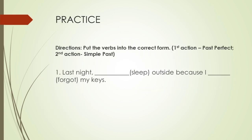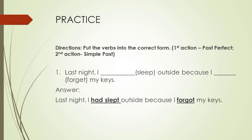Let's practice what you already know by doing this activity. The directions: put the verbs into the correct form — transform the first verb into past perfect and the second verb into simple past. For the first sentence, the answer is: 'Last night I had slept outside because I forgot my keys.' Here, the past perfect form of 'sleep' is 'had slept,' and the simple past form of 'forget' is 'forgot.'